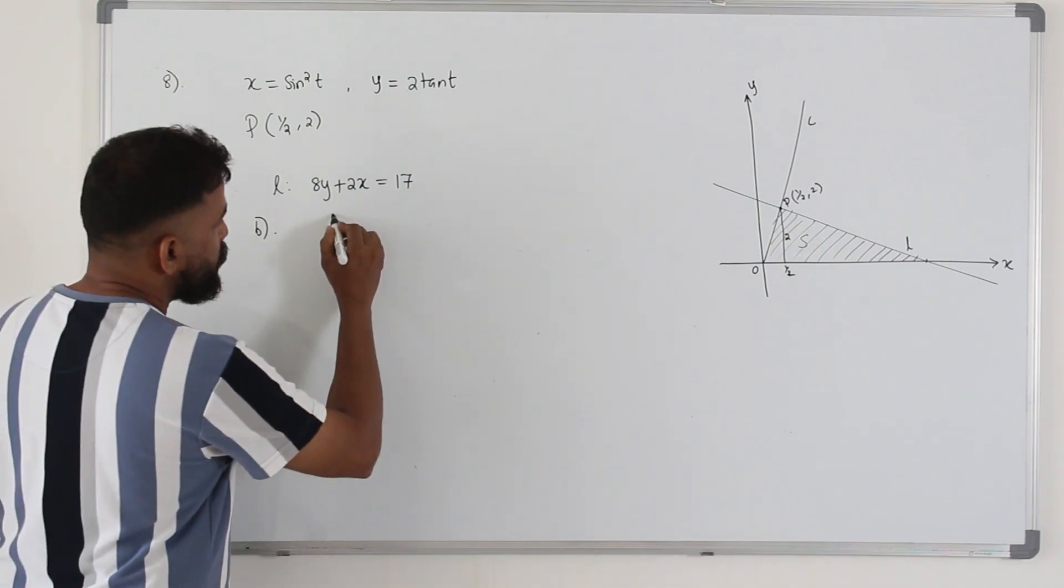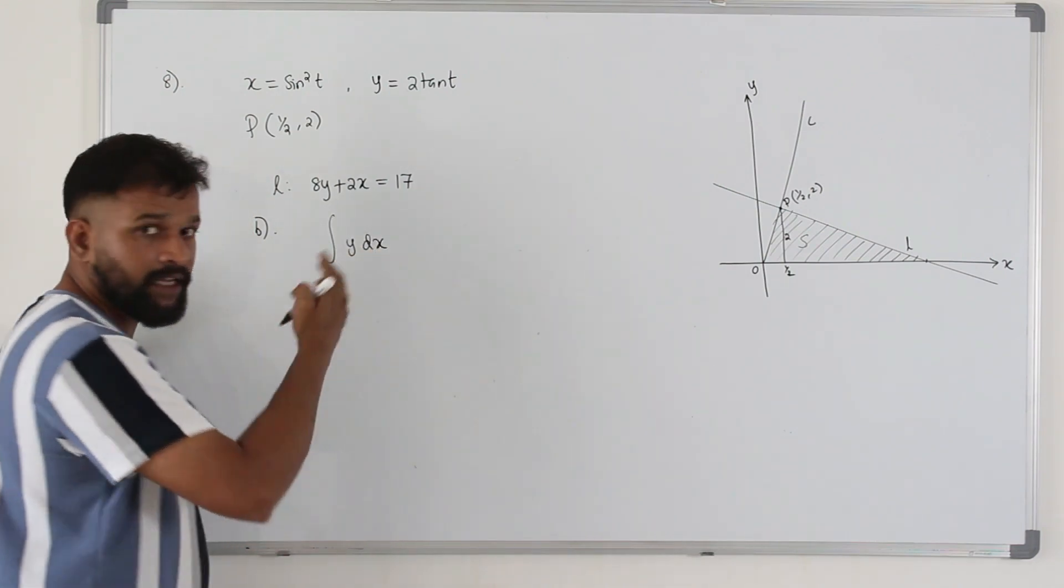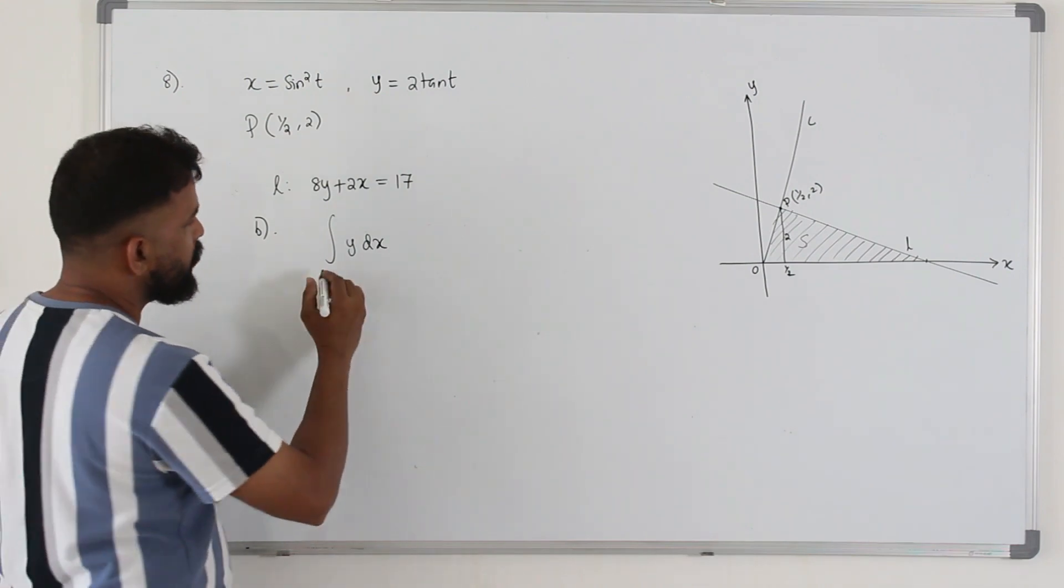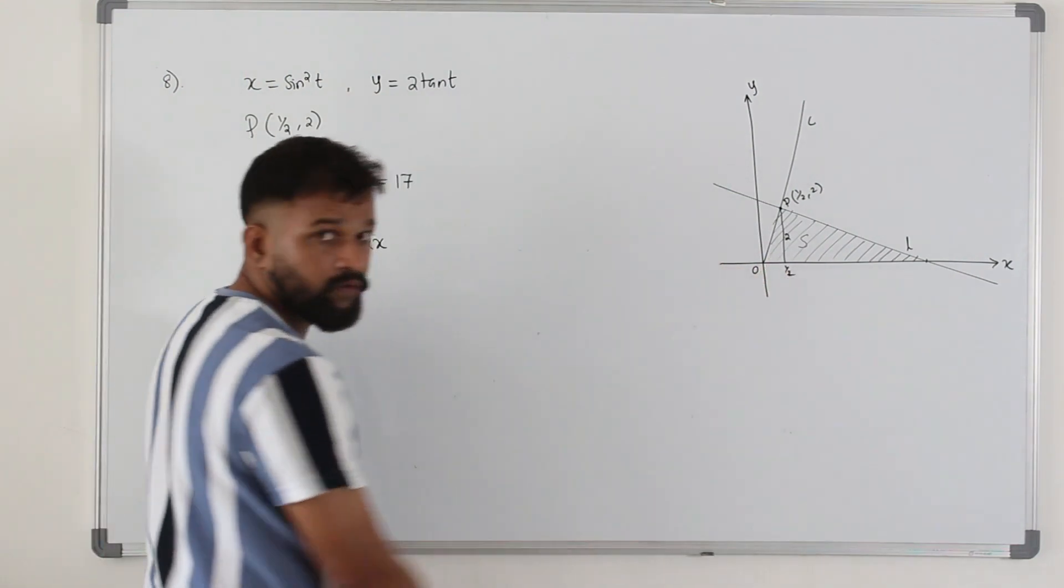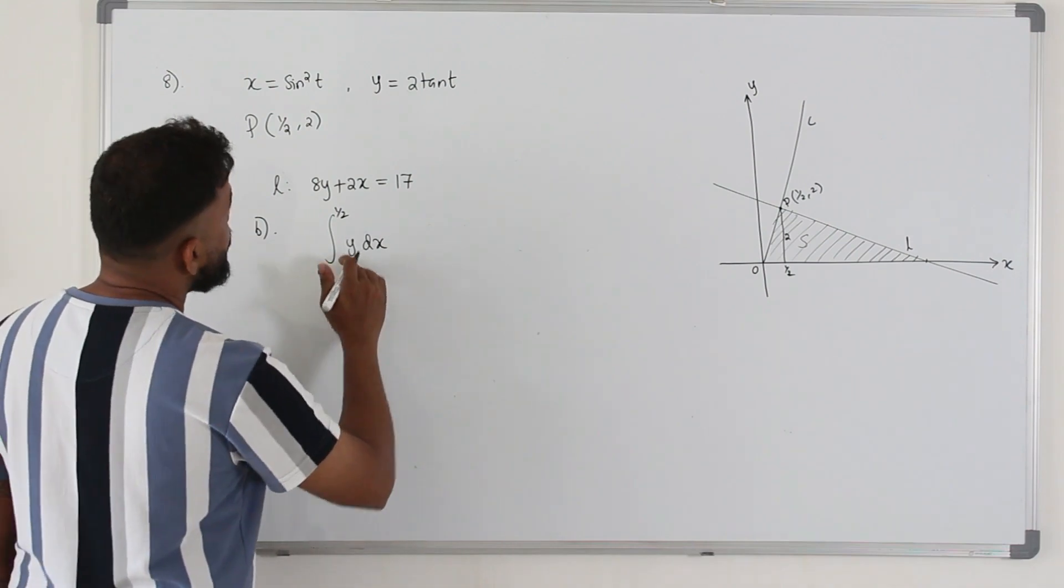So area below the curve is integral y dx. That's the formula to find the area below the curve. The limit is 0 to half. Here y is this.